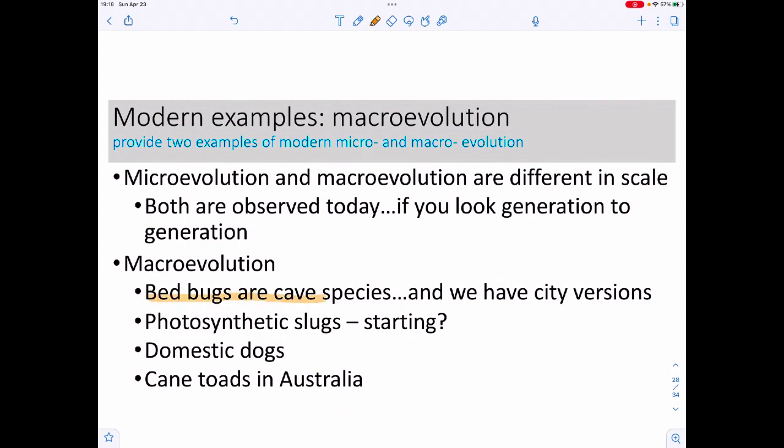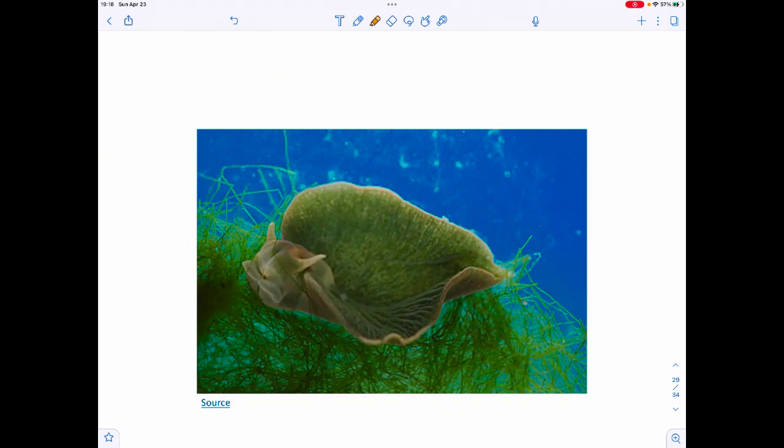We also see this macroevolution. We still see speciation as well. Bed bugs actually came from cave species, and we have city versions that do not mate with the cave versions. In the span of humanity moving into cities, we have caused the evolution of a new type of insect. We have photosynthetic slugs. Is this the start of making photosynthetic animals? Great question. Domestication of dogs is on us, but cane toads are starting to behave far differently than they would in their natural environments.